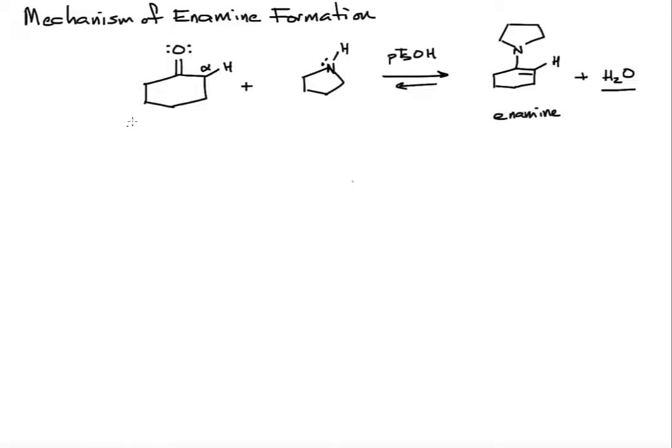First things first, let's go ahead and write this as HA. That will signify our acid, just so we don't have to draw the p-toluenesulfonyl every time.